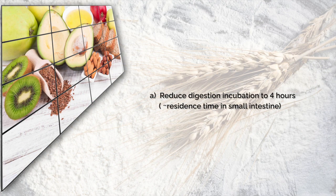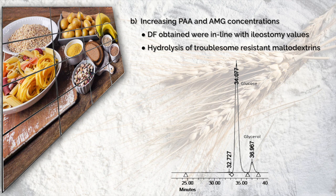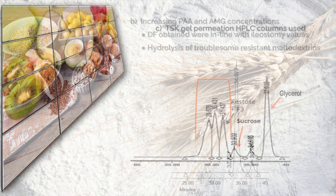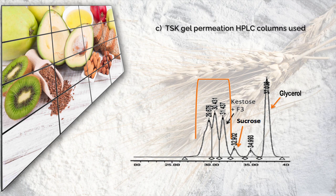These limitations were addressed by: A. Reducing the incubation time with pancreatic alpha amylase and amyloglucosidase to 4 hours, in line with the likely time of residence of food in the small intestine. B. Increasing the concentrations of pancreatic alpha amylase and amyloglucosidase so that the dietary fibre values obtained for various resistant starch controls were in line with ileostomy values. These increased concentrations resulted in hydrolysis of the troublesome resistant maltodextrins. C. Using TSK gel permeation HPLC columns in place of Waters Sugar Pack to get accurate delineation of disaccharides and trisaccharides, and thus including fructotriose in the dietary fibre value.